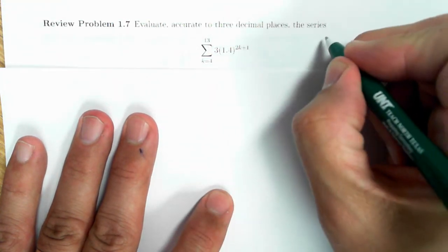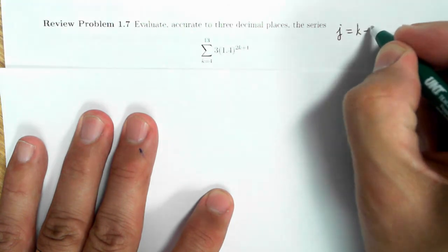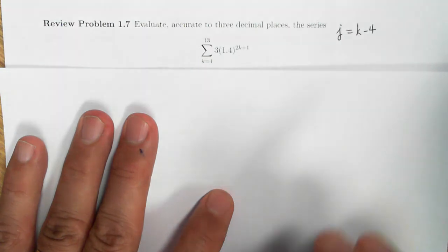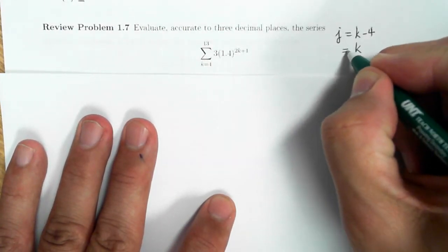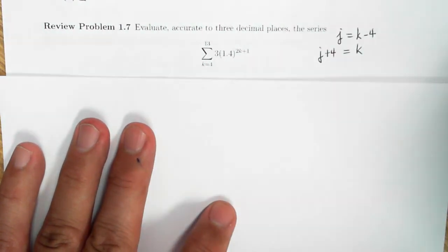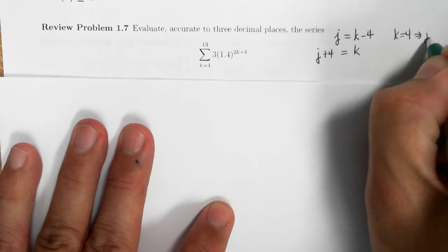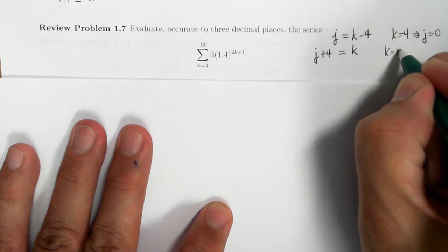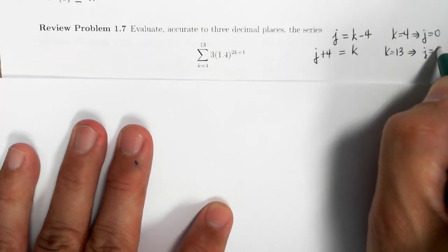So to make that change of index happen, we're going to let j be equal to k minus 4, so that when I take 4 minus 4, I'll get something starting on 0. So to make this work, that means that k is equal to j plus 4. Also, I need to worry about the endpoints. If k is equal to 4, that means that j is equal to 0. And at the other extreme, if k is equal to 13, 13 minus 4 is equal to 9. So that's j equals 9.